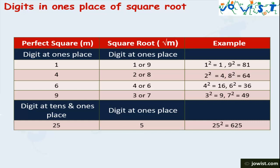If a perfect square number has 6 in its 1's place, then its square root will have 4 or 6 in its 1's place. The square of 4 is 16 and the square of 6 is 36 — both have 6 in their 1's place. A perfect square number having 9 in its 1's place will have 3 or 7 in its 1's place. The square of 3 is 9 and the square of 7 is 49 — both have 9 in their 1's place.